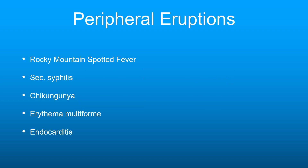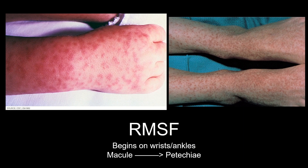The rash in Rocky Mountain Spotted Fever starts on the wrist and ankles, as you can see here, and it appears later in the palm and soles. Remember that it appears later in the palm and soles. The macules will be blanchable — that is, they will go away on pressing and then come back.